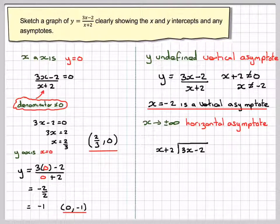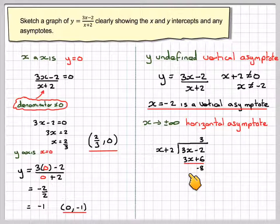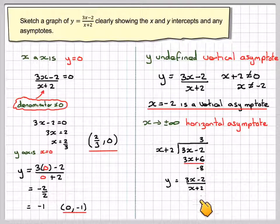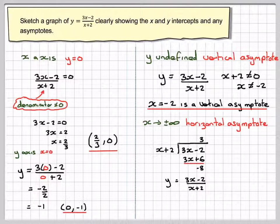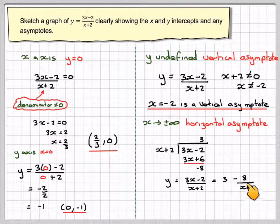3x minus 2 divided by x plus 2. 3x divided by x equals 3. 3 times x gives 3x, 3 times 2 gives plus 6. Doing the subtraction: 3x minus 3x is nothing, minus 2 minus 6 is minus 8. So this becomes 3x minus 2 over x plus 2 equals 3 minus the remainder over the divisor, which is 8 over x plus 2.